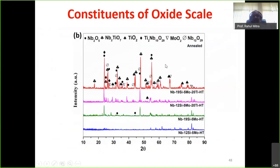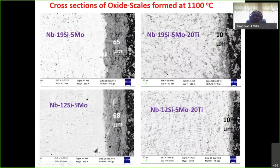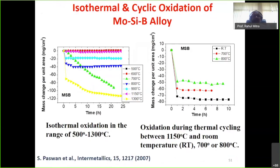When titanium is present, mixed oxides such as Nb2TiO7 and TiO2 are formed alongside Nb2O5, while SiO2 is amorphous and its peaks are not observed in XRD. The oxide scale for titanium-containing alloys is more stable and more passive; cross-sectional images show the scale becomes smoother with increasing oxidation temperature, and oxide scale thickness decreases significantly with Ti addition, confirming that titanium addition improves oxidation resistance.